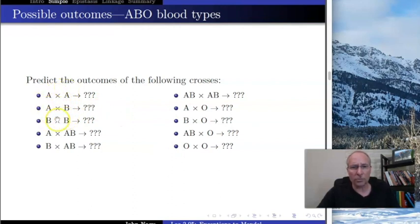Here are the possible cases. A cross A, A cross B, B cross B, A cross AB, B cross AB, AB cross AB, A cross O, B cross O, AB cross O, and O cross O. Those are all the possible things that can happen.